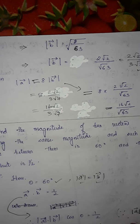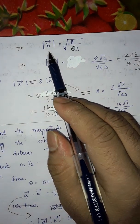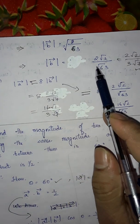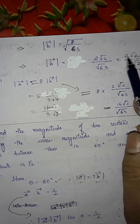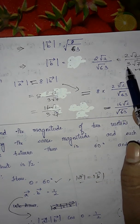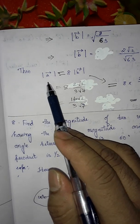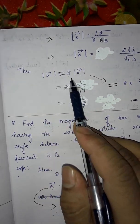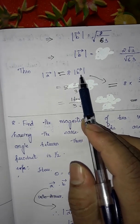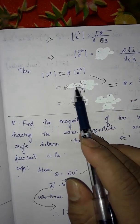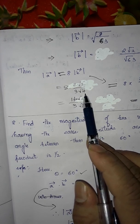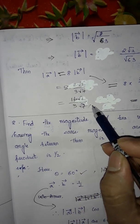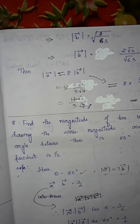Take square root on both sides: magnitude of b = √(8/63). Since √8 = 2√2 and √63 = 3√7, we get |b| = 2√2 / 3√7. Since magnitude of a = 8 times magnitude of b, substitute: |a| = 8 × (2√2 / 3√7) = 16√2 / 3√7. So magnitude of a = 16√2 / 3√7 and magnitude of b = 2√2 / 3√7.